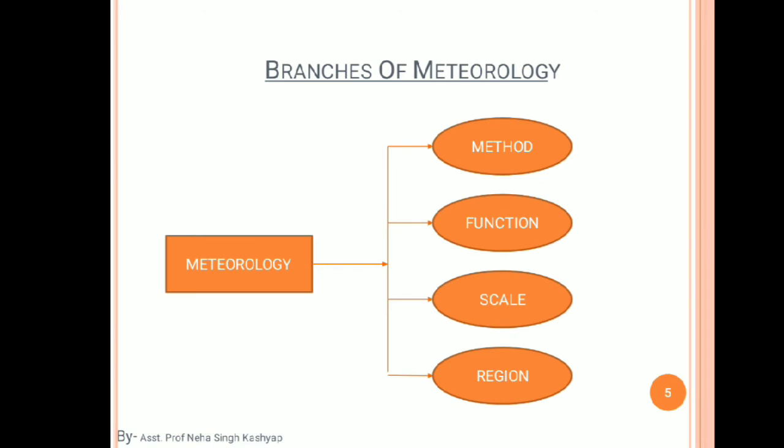Moving on, there are some branches of meteorology. Meteorology has been categorized into four categories: first is method, second is function, third is scale, and last is reason. Under method, there are four sub-categories: synoptic meteorology, dynamic meteorology, physical meteorology, and statistical meteorology.